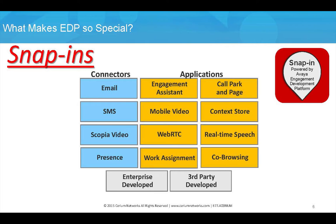Snap-ins provide the benefits of being able to quickly integrate new capabilities into business processes and functions that efficiently reuse core capabilities across multiple business applications. Snap-ins essentially fall into two categories: connectors that enable media functionality such as email, SMS, video, and presence, and applications which act on communication flows.